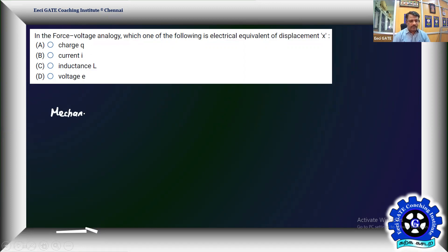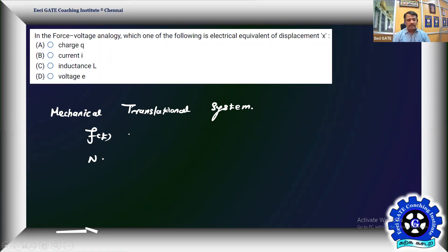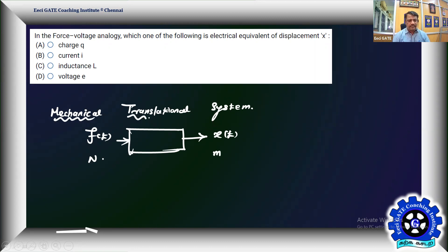Once we have the mechanical translational system fundamentals, it's easy to answer this problem. We have a mechanical translational system whose input is F(t), the force in newtons. That translational system produces an output as displacement x(t), that is in meters. That's what we call a mechanical translational system.